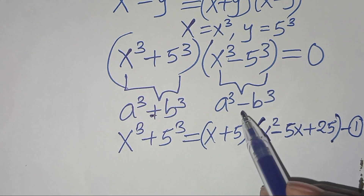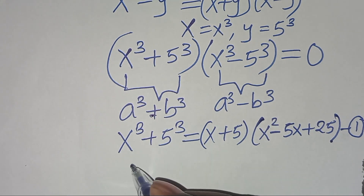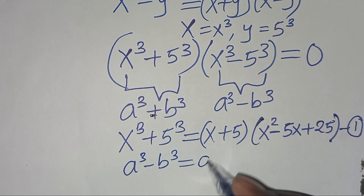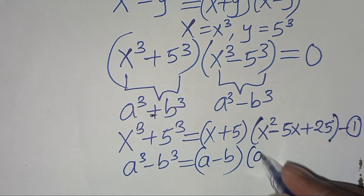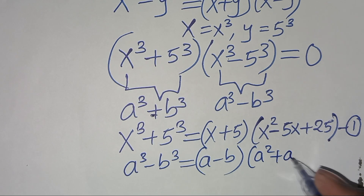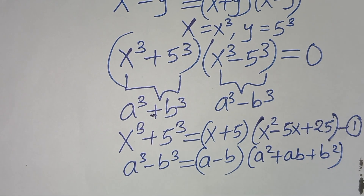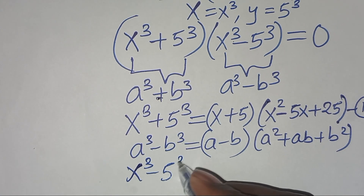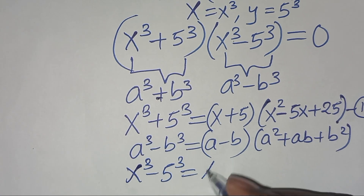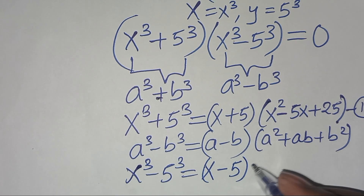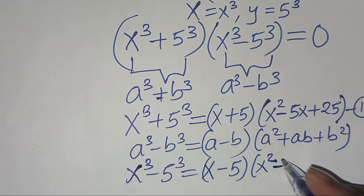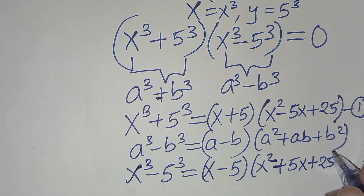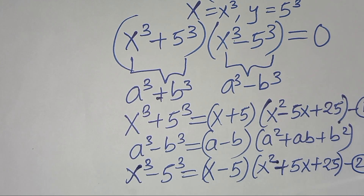The second part is the difference of two cubes: a cubed minus b cubed, which is expressed as (a minus b)(a squared plus ab plus b squared). Therefore x³ minus 5³ equals (x minus 5)(x squared plus 5x plus 25). Let's call this equation 2.